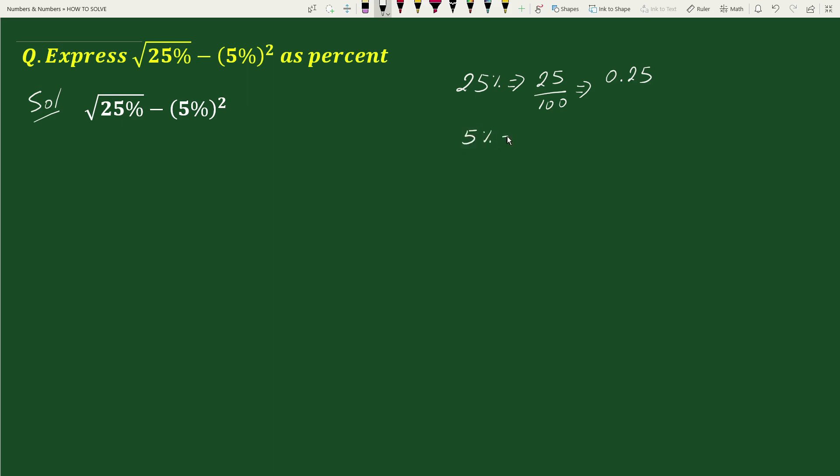we can write 5% as 5 by 100 equals to 0.05. So we can write this whole expression as square root of 0.25 minus 0.05 whole square.